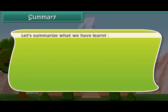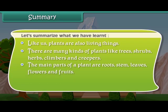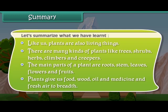Now friends, let us summarize what we have learned so far. Like us, plants are also living things. There are many kinds of plants like trees, shrubs, herbs, climbers, and creepers. The main parts of a plant are roots, stem, leaves, flowers, and fruits. Plants give us food, wood, oil, medicine, and fresh air to breathe.